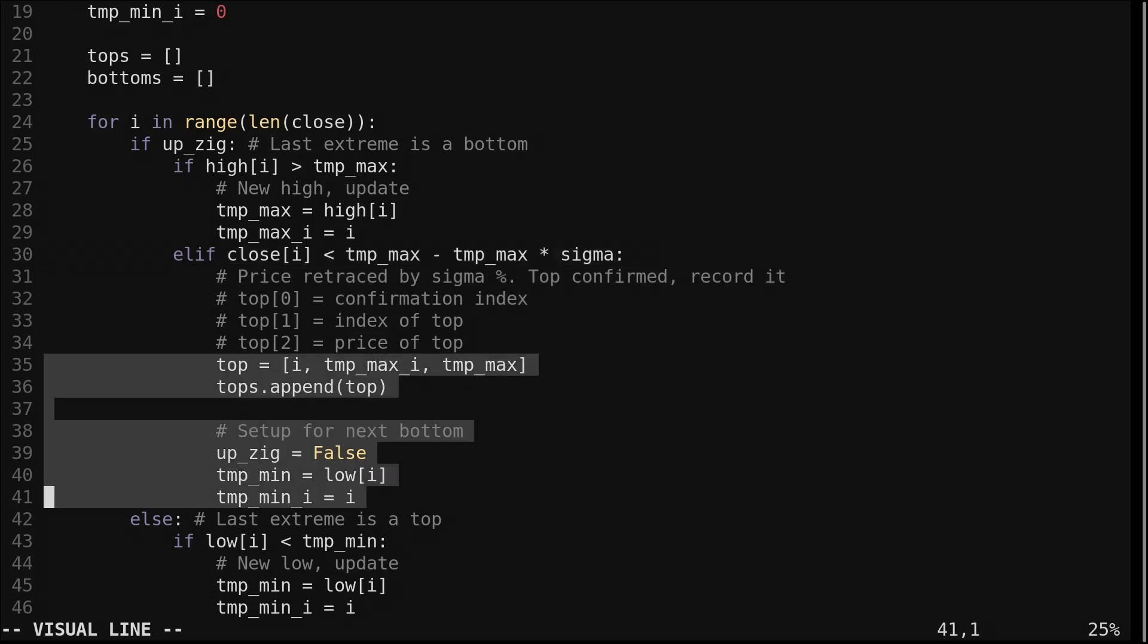If it has, we record a confirmed top, set our upzig boolean to false, and record the penetrating candle's low for the upcoming bottom.